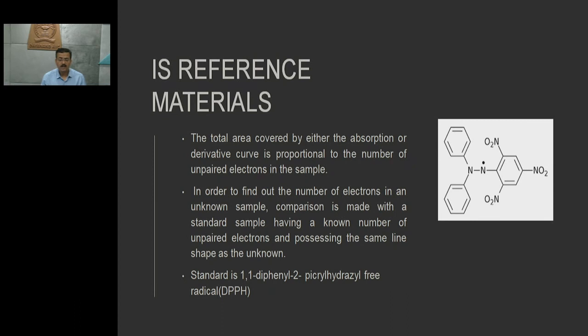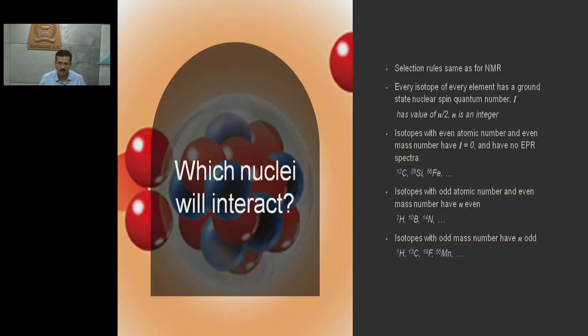When we go for reference materials, what is the purpose? The reference material tells us where the G factor actually is. It can be compared with this reference material - that is 1,1-diphenyl-2-picrylhydrazyl free radical. This DPPH is used as a reference material to compare with respect to the unknown sample. Then whatever peak we get - the absorption peak and its derivative peak - tells us how many unpaired electrons are present in the molecule.